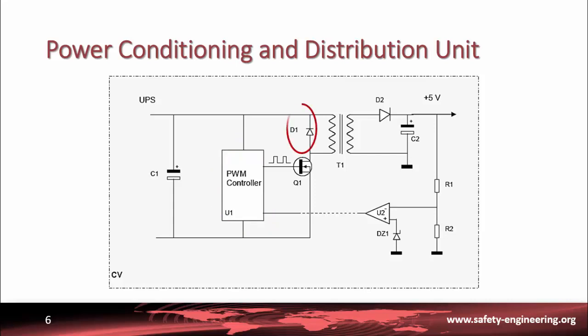Diode D1 protects the UPS and the transistor Q1 against over voltage during Q1 commutation. T1 transforms the voltage between primary and secondary windings. Diode D2 rectifies the alternative voltage from T1. Capacitor C2 filters plus 5 volt output voltage.